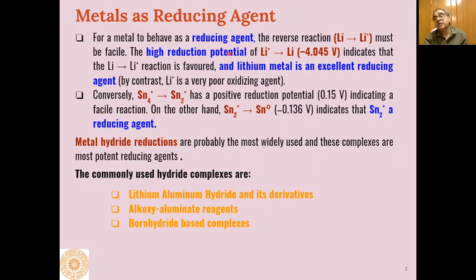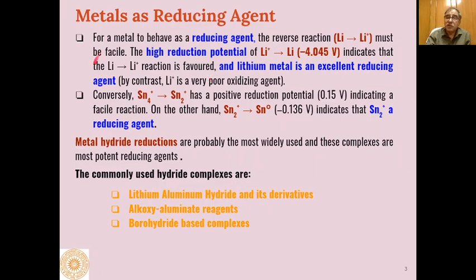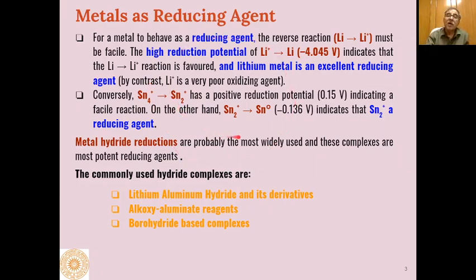How effective a reducing agent will be depends on the reduction potential of that reducing agent. If we have a high reduction potential, that means the reaction is favored — for example, lithium gives lithium ion plus an electron, and that electron is used in converting the reactant to a reduced product. The strength of the reducing agent is based on how much reduction potential is there in converting the reducing agent into its oxidized form.